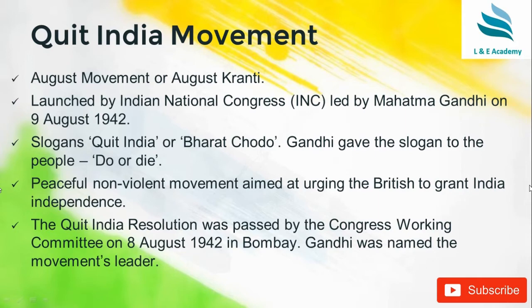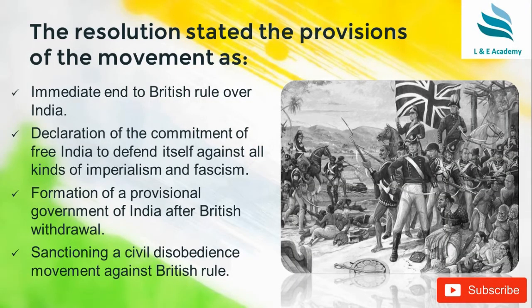The Quit India Resolution was passed by the Congress Working Committee on 8th of August 1942 in Bombay, and Gandhiji was named the leader of this movement. The resolution had certain provisions and objectives. The biggest objective was to remove British rule over India immediately, declare commitment to a free India, and let India fight against any form of imperialism and fascism. In other words, India wanted complete independence from British rule as the prime objective of the Quit India Movement in 1942.